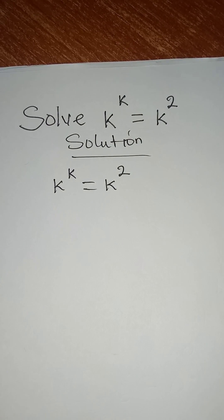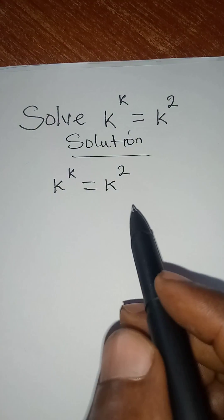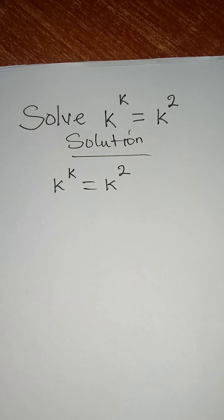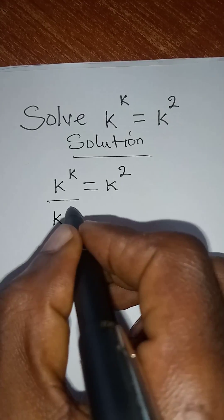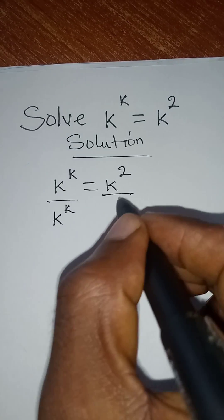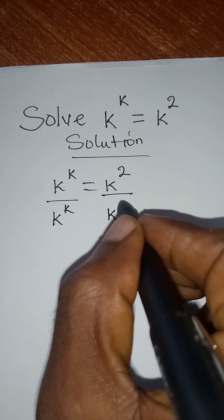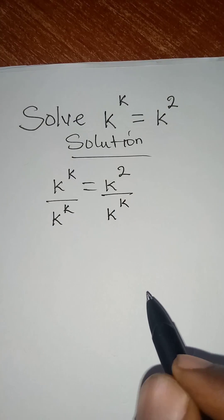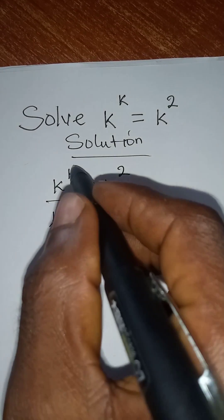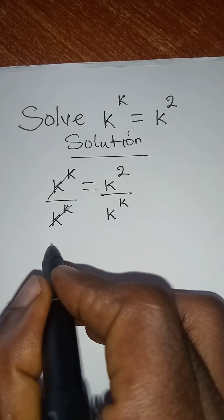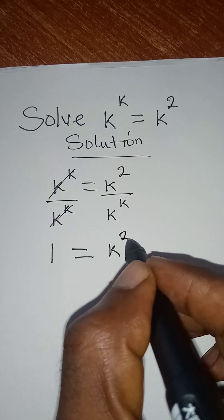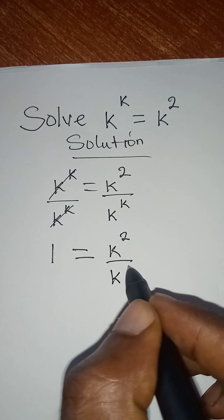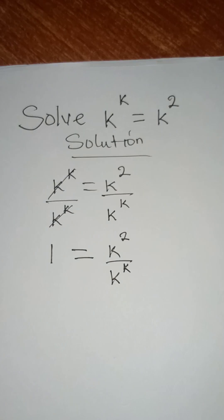So the first thing I will do is to divide both sides by k to the power of k. I will divide this by k to the power of k and divide this by k to the power of k. This will cancel this. It means that we have 1 there and this is equal to k to the power of 2 all over k to the power of k.